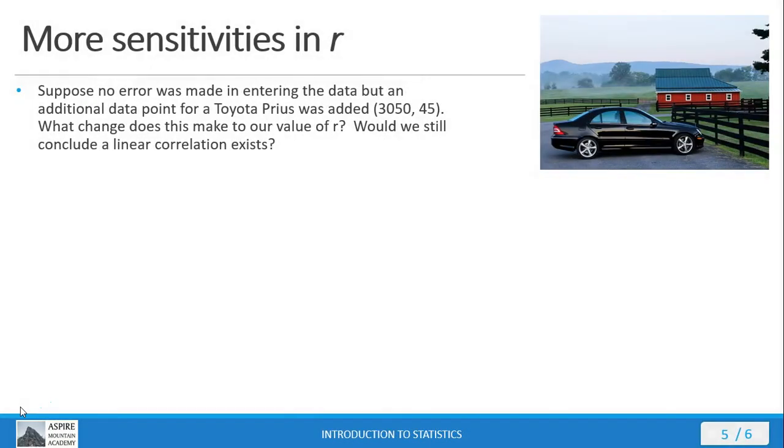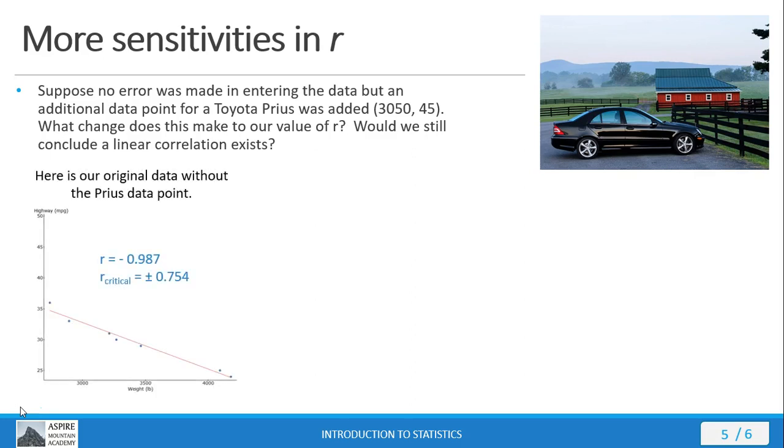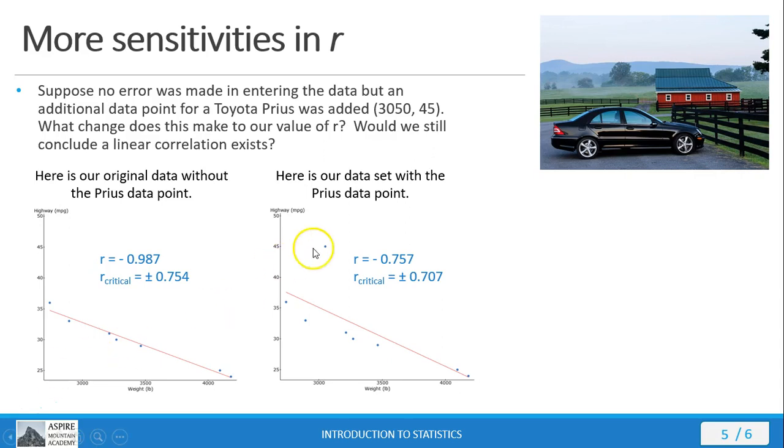Now let's suppose no error was made during transcription, but we decide later to add an additional data point for a Toyota Prius to our data set. Now what change, if any, would this make? Well, let's look first at a scatter plot of our original data set and here's what it looks like with the additional data point. You see it appearing up here as an outlier with the effect that it pulls our line of best fit up towards it.